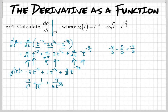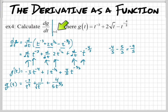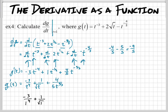This isn't looking that much nicer, so let's just leave it like that and plug in t equals 1 to find our answer. We're going to have negative 3 over 1 to the fourth, plus 1 over the square root of 1, plus 4/5 times 1 raised to the 9/5.